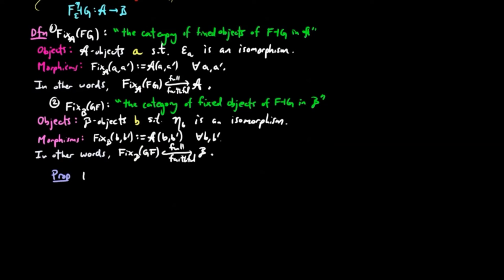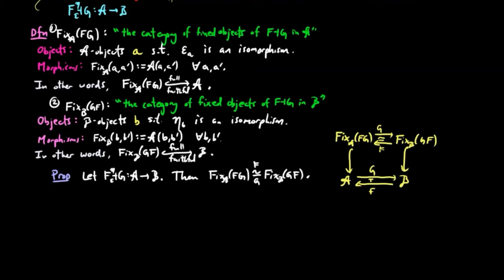Then, if we are given an adjoint situation FG, the category of fixed objects in A is equivalent to the category of fixed objects in B, as indicated in the diagram on the right. It is easy to verify this, since the restrictions of the functors G and F make eta and epsilon isomorphisms. And this is the definition of an equivalence of categories.